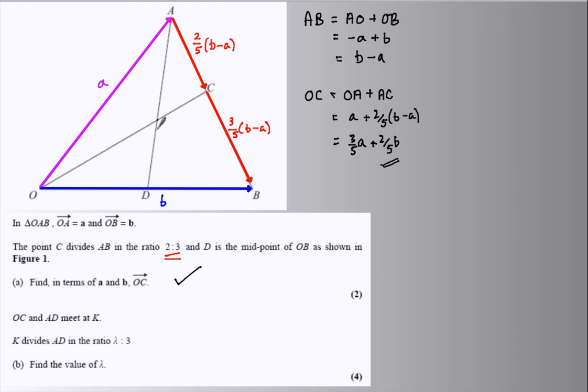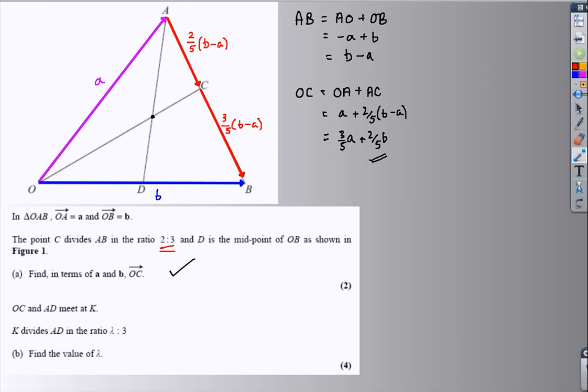Now we're told that K sits along AD, but it divides in a similar sort of way that we divide AB, but rather than 2 to 3, we're given the ratio lambda to 3. So what I'm going to do here is I'm just going to split it and label it in a similar sort of way. So I'm looking to split and label this here.